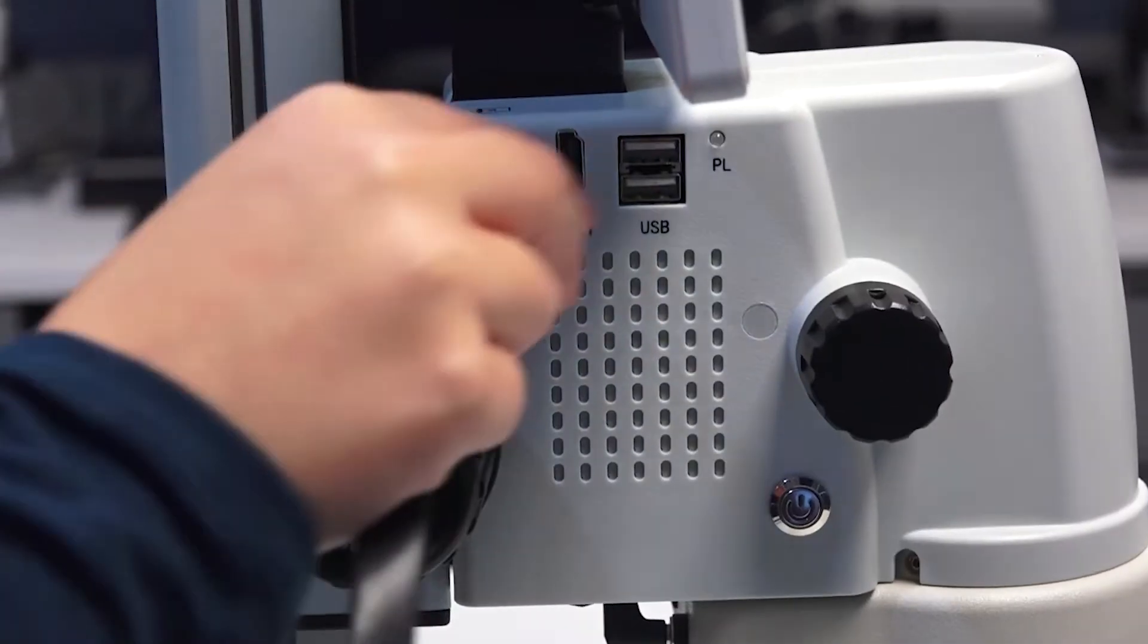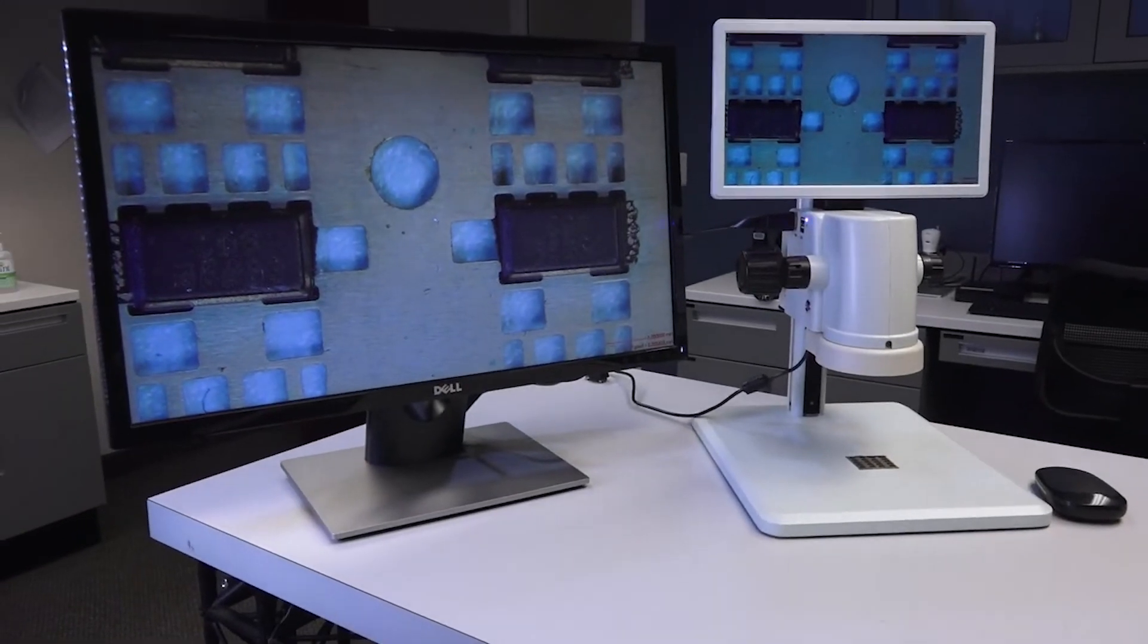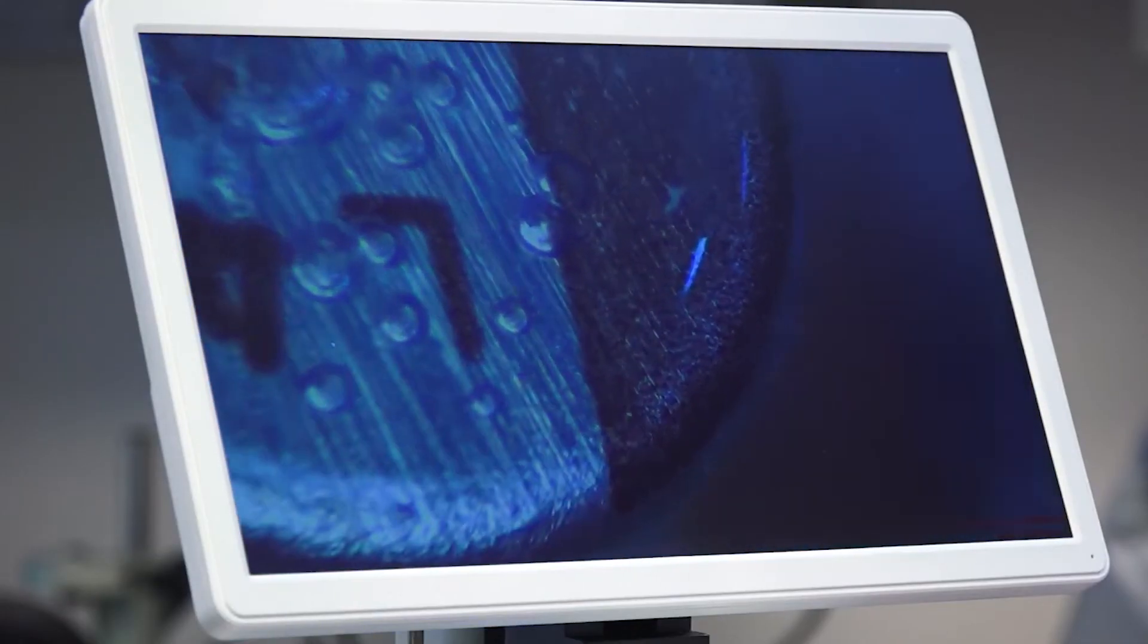The MicroView also features an HDMI output for viewing images on an external monitor. Optical magnification is adjusted using the click-stop zoom knobs on the side of the device.